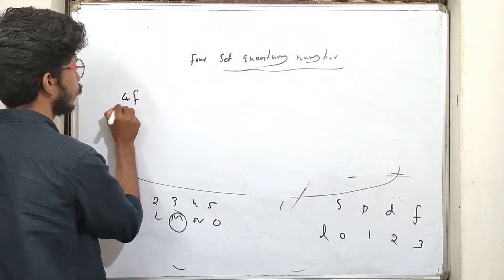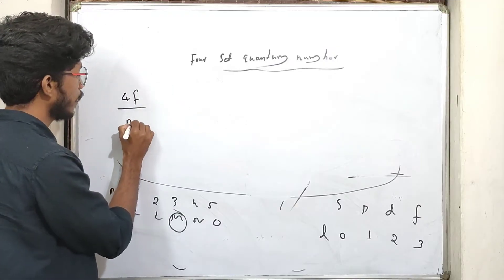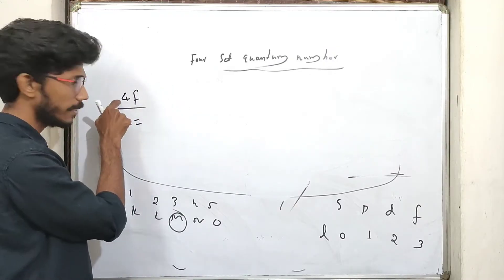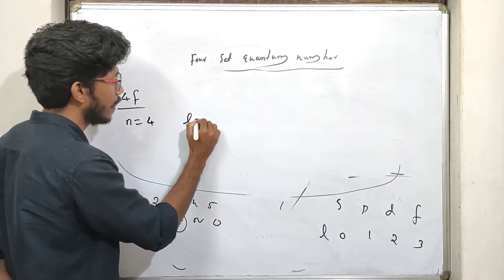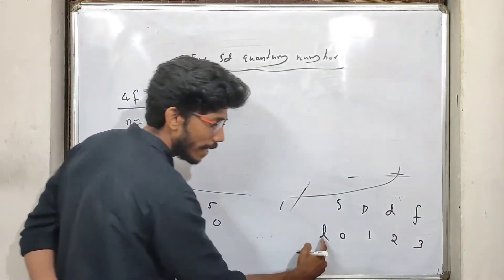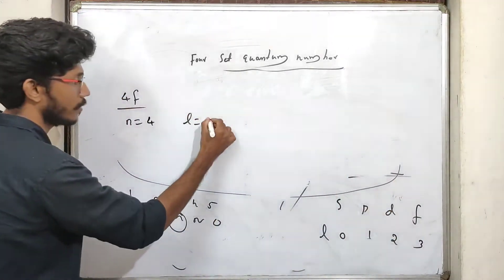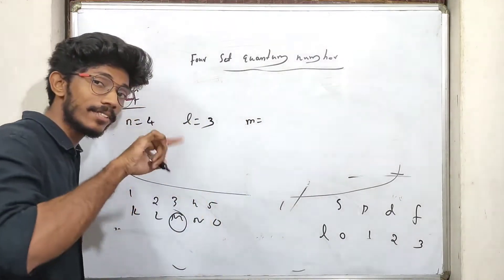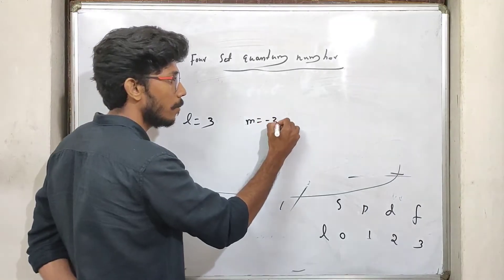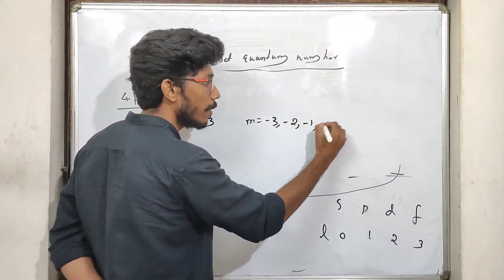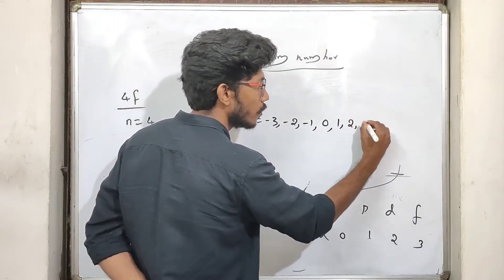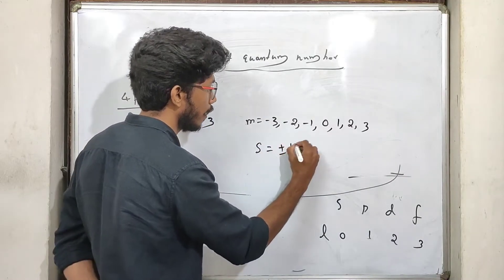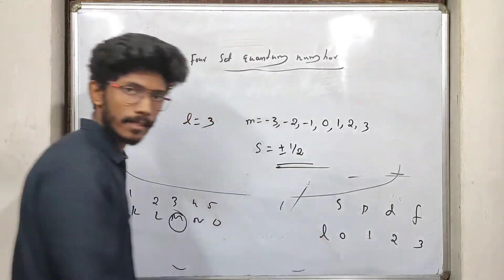For 4f: n=4, l=3. The magnetic quantum number m ranges from minus l to plus l: minus 3, minus 2, minus 1, 0, 1, 2, 3. That is clear.